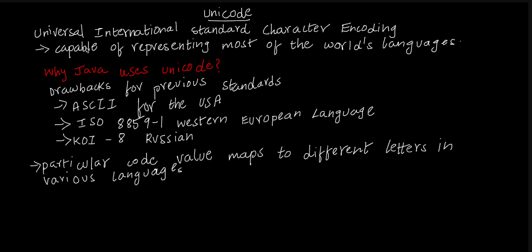The main motto behind Unicode is its capability of representing most of the world's languages. There are numerous languages in the world, for example: English, Tamil, Telugu, Spanish, French, Chinese, and so on. All these language characters can be represented using Unicode.